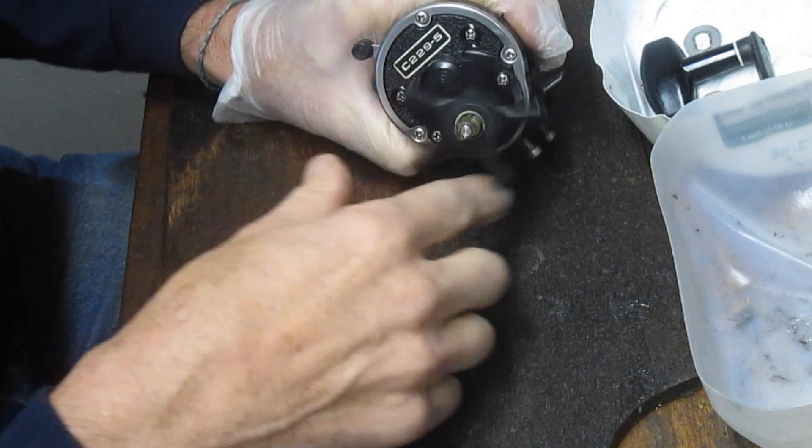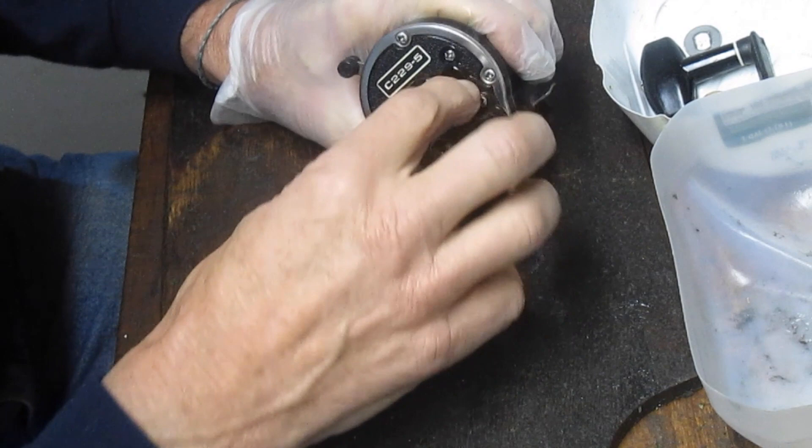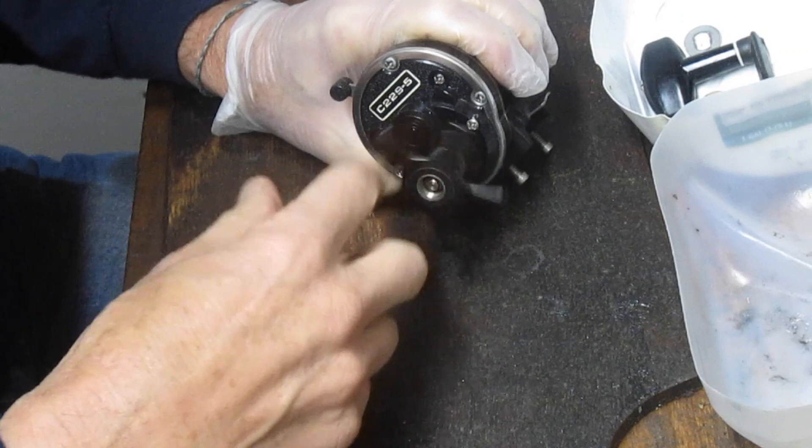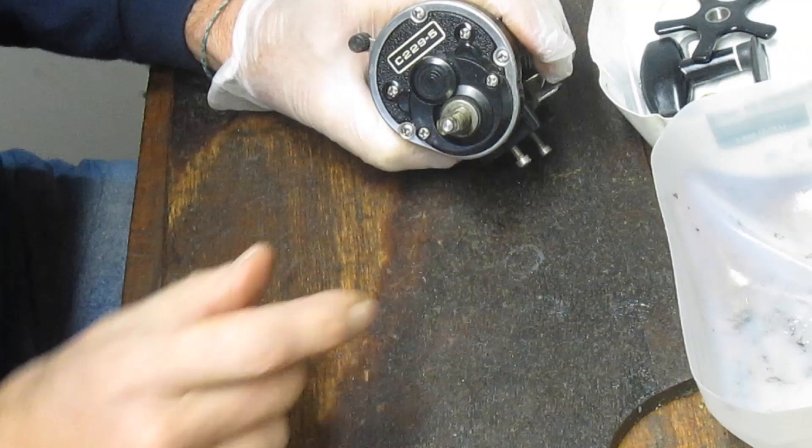I took the tension washer off the star drag adjuster. I'm going to walk the star drag adjuster back, and then we'll get to the case. So Carl Newell was a plastic engineer out in California. He was not an employee of Penn.